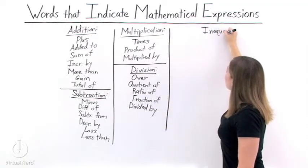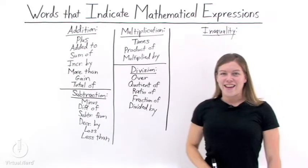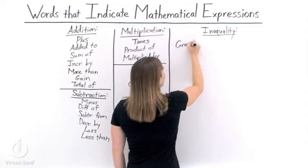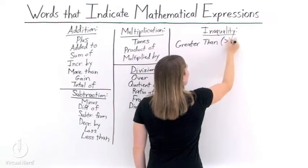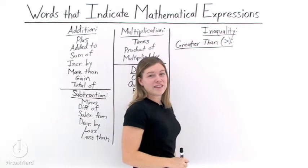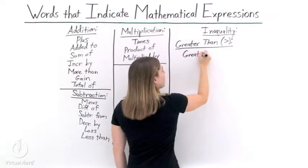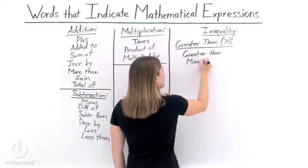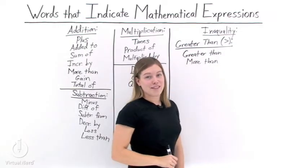There are four types of inequalities, so let's look at each one separately. First, let's look at the inequality greater than. The greater than symbol is a right-pointing arrow without the line. Words that indicate greater than include 'greater than' and 'more than' — either of those means we have a greater than symbol.